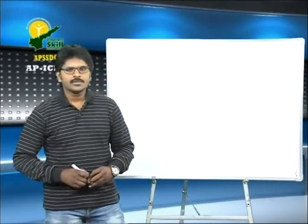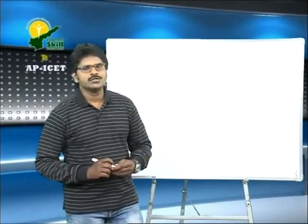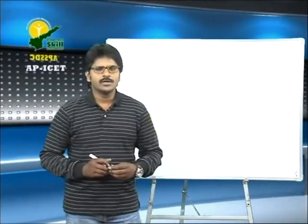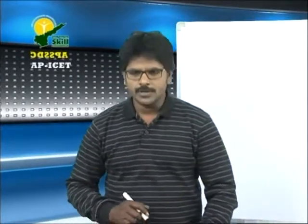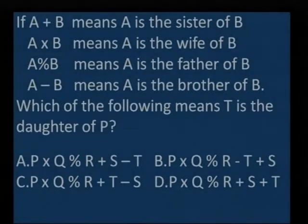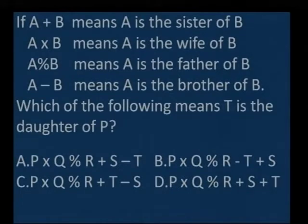Welcome back. We are discussing blood relations from modern syllabus — already two models covered and now the third one. The question is: if A plus B means A is the sister of B, A cross B means A is the wife of B, A percentage B means A is the father of B, and A minus B means A is the brother of B — which of the following means T is the daughter of P?